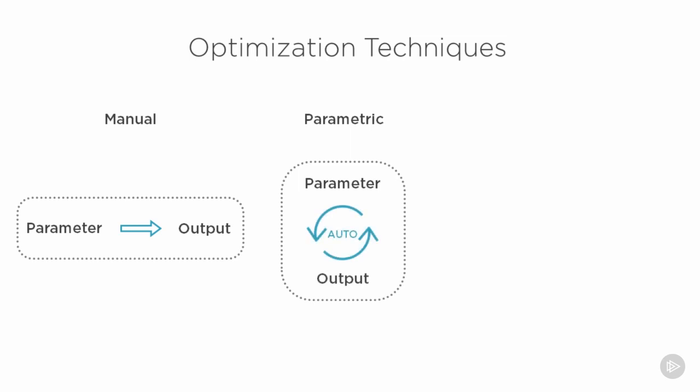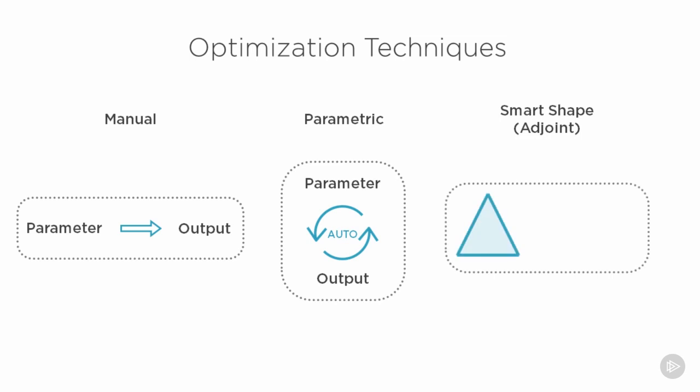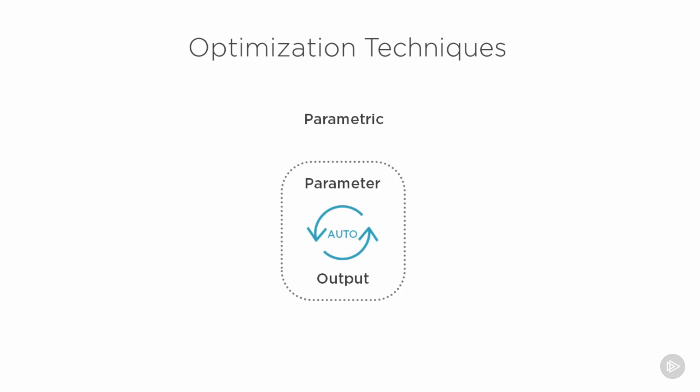The third type of optimization is called smart shape, which uses an adjoint solver that runs a topology optimization. For example, if you have a triangle and want to optimize the length of one side, it won't change the length but will actually change the shape of the triangle — that's called smart shape optimization. But for today we're going to address the second one, which is parametric optimization.